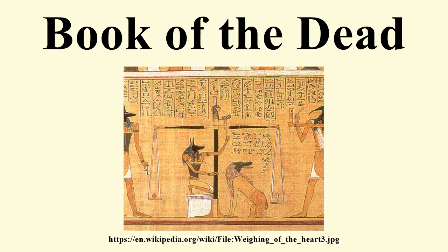After the Saite Dynasty, in the Late Period and Ptolemaic Period, the Book of the Dead remained based on the Saite Recension, though increasingly abbreviated towards the end of the Ptolemaic Period. New funerary texts appeared, including the Book of Breathing and Book of Traversing Eternity. The last use of the Book of the Dead was in the 1st century BCE, though some artistic motifs drawn from it were still in use in Roman times.